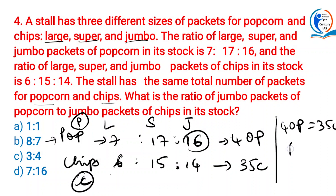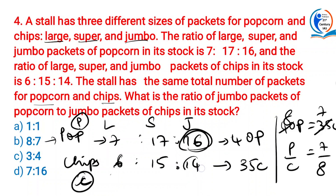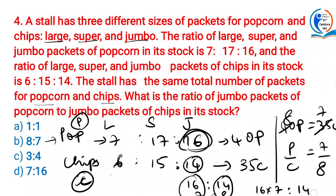From 40P = 35C, P to C is 7 to 8. The ratio of jumbo packets is 16 (popcorn) to 14 (chips). The ratio of total jumbo popcorn to jumbo chips is 16 × 7 to 14 × 8 = 112 to 112, which simplifies to 1 to 1. So the answer is 1 to 1.